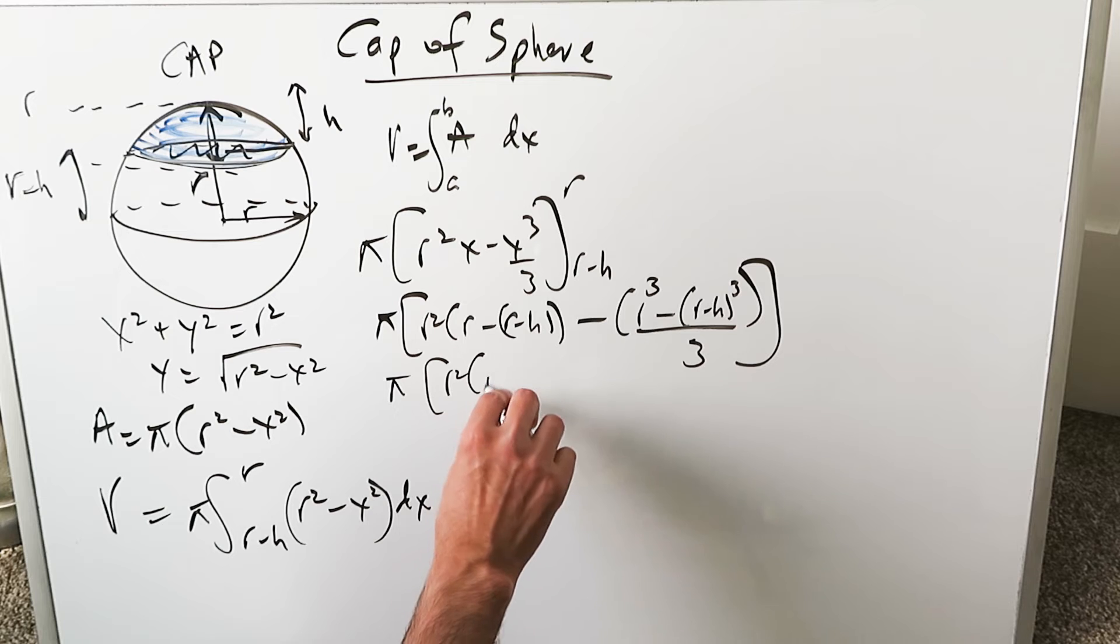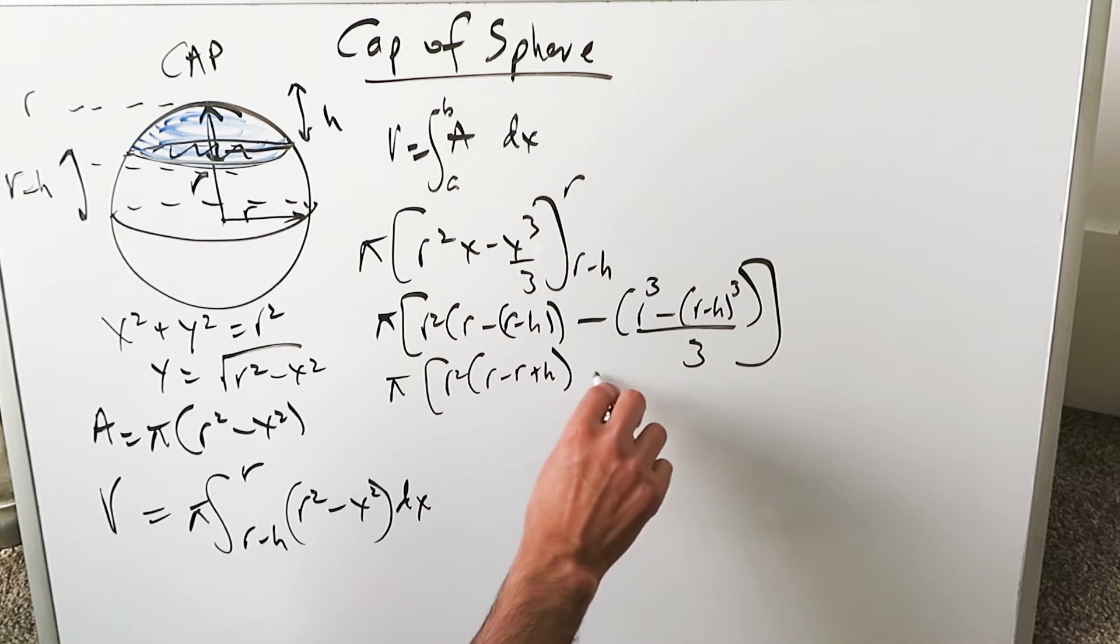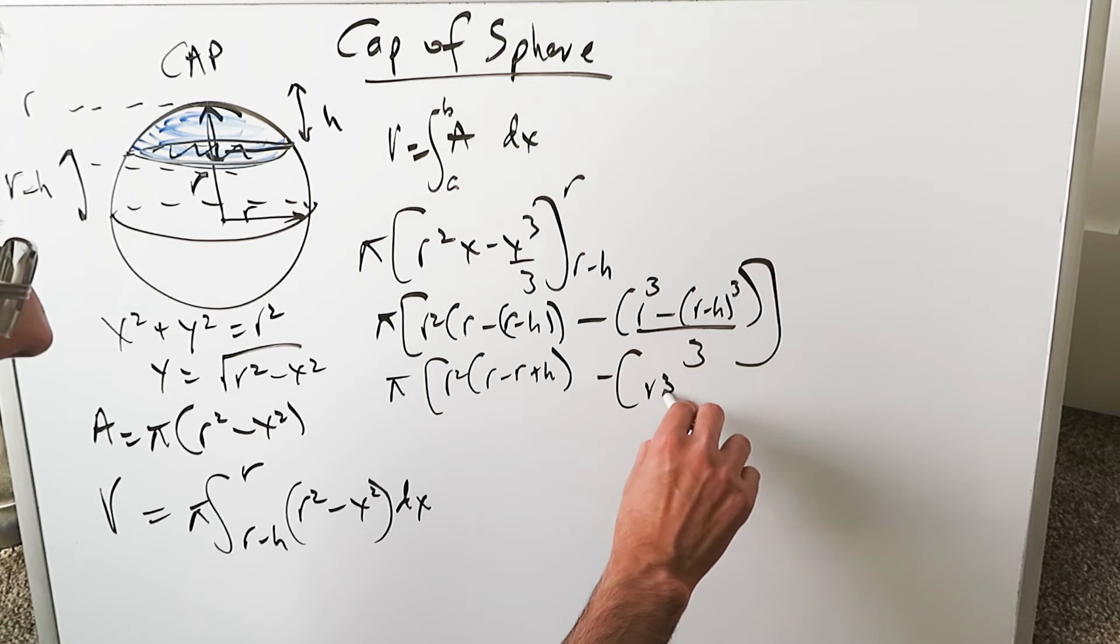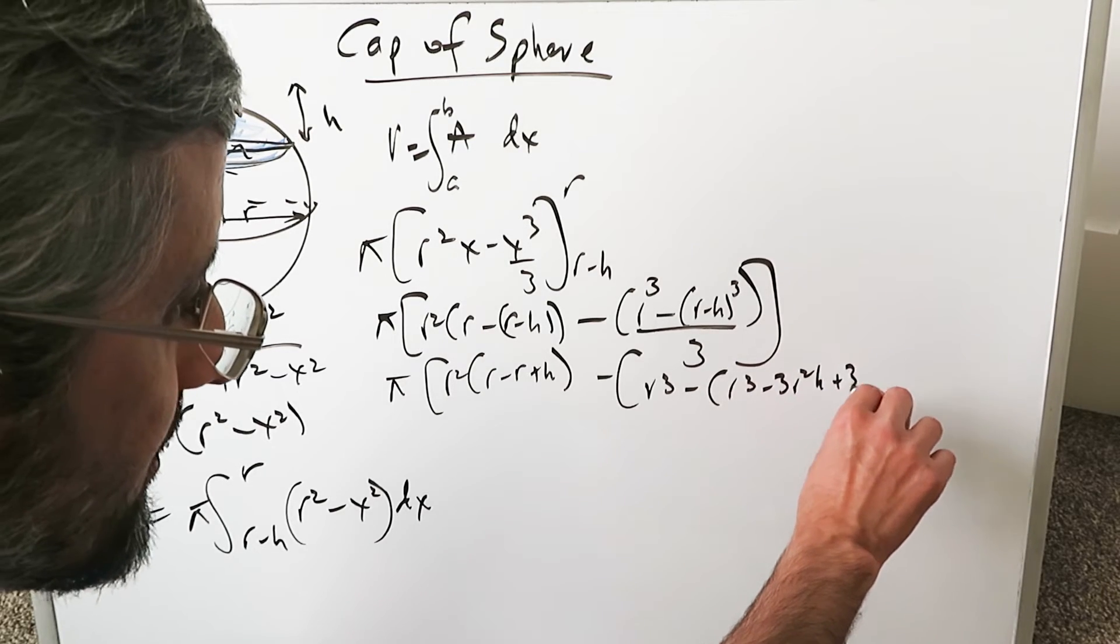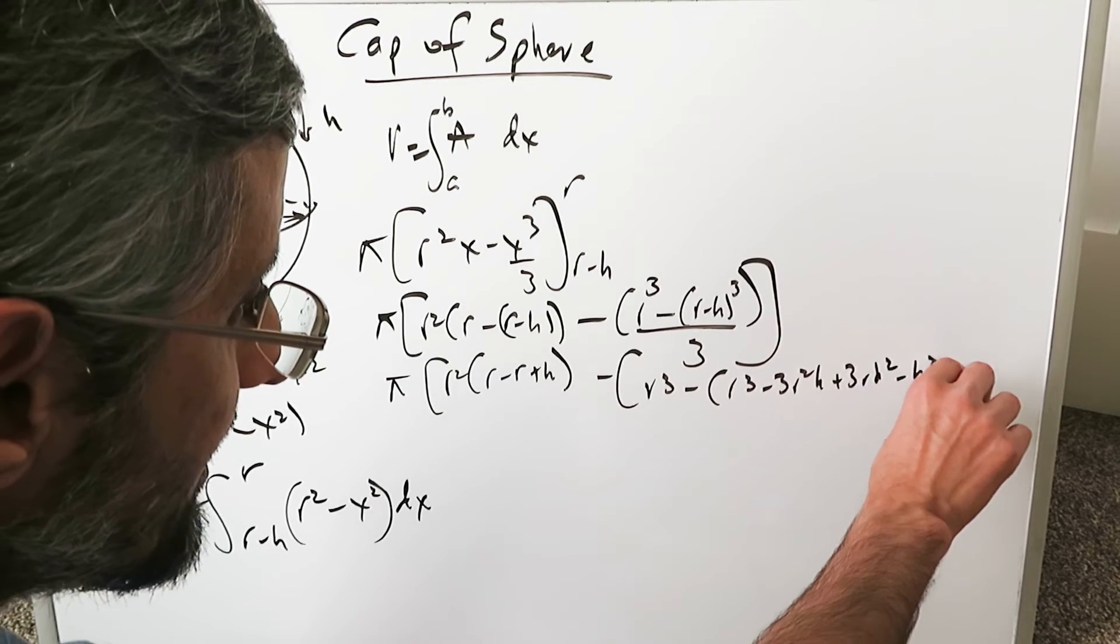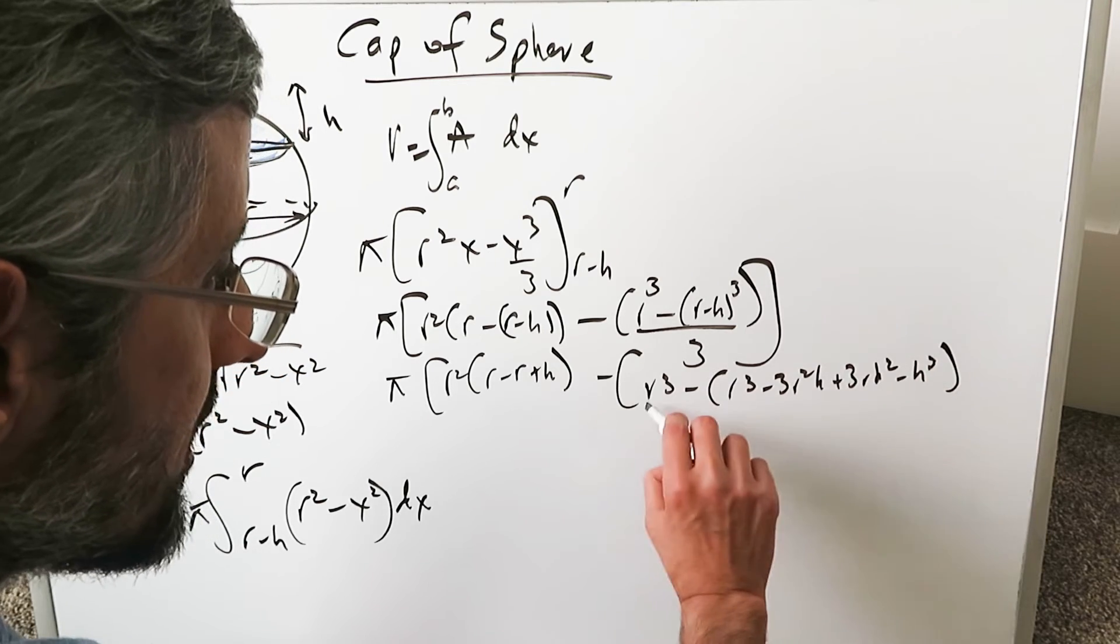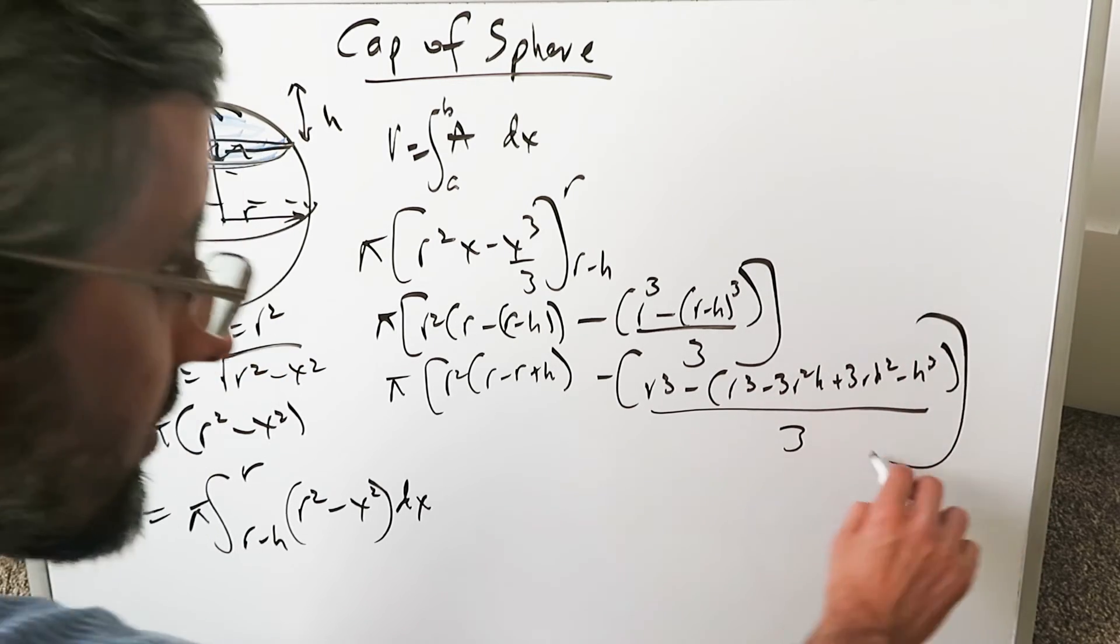Pi R squared R minus R plus H minus. Open this up. You'll have R cubed minus R cubed minus 3 R squared H plus 3 R H squared minus H cubed all over 3. Close it up.